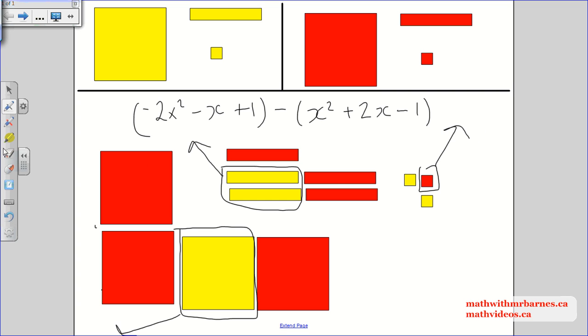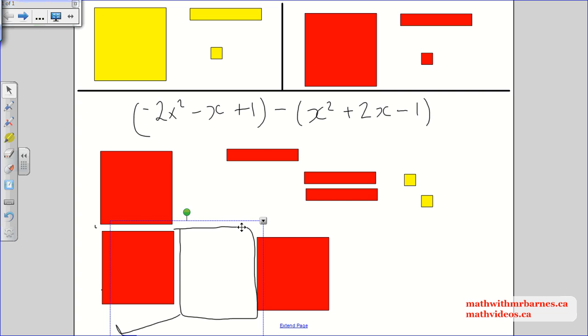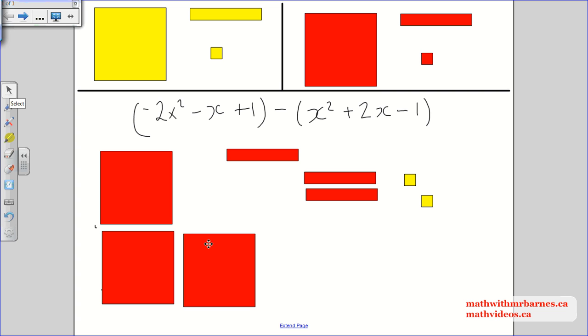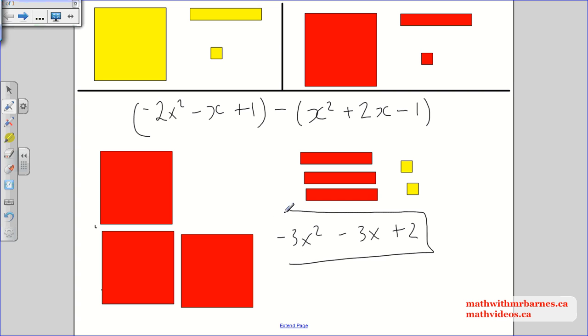So what I'm left with is this stuff that's not circled. So let me get rid of some of this circled stuff here. So I'm going to delete that. Delete that. So this is what I'm left with. I'm left with negative 3x squared subtract 3x plus 2. So negative 3x squared subtract 3x plus 2. That's how it's done.